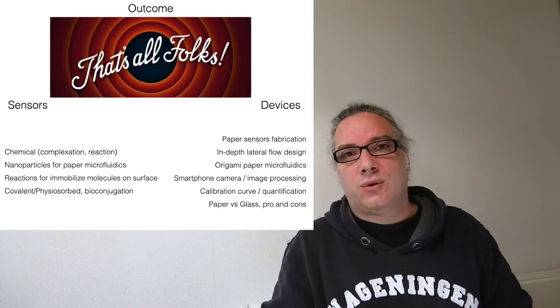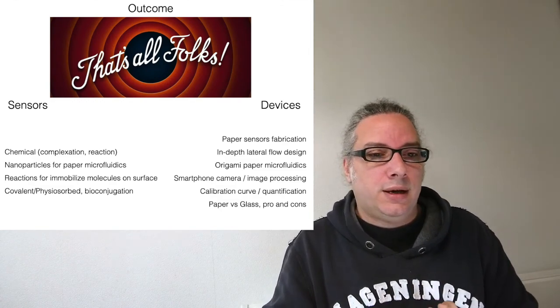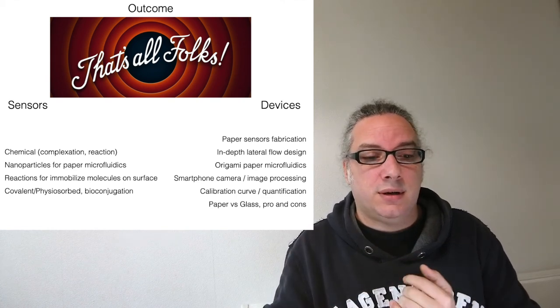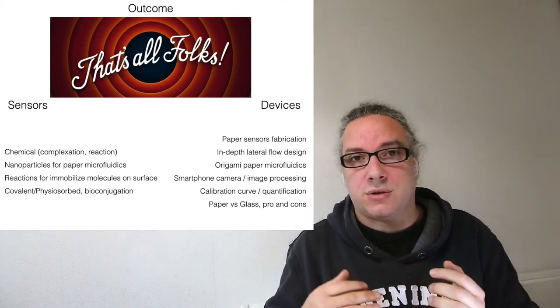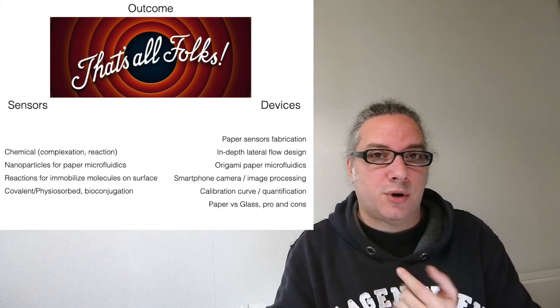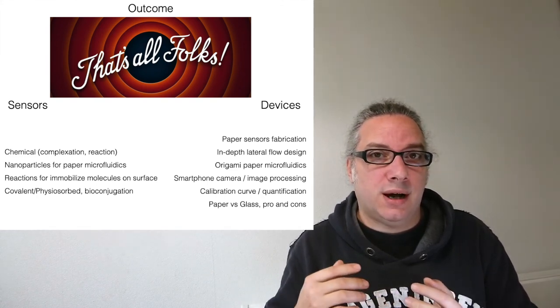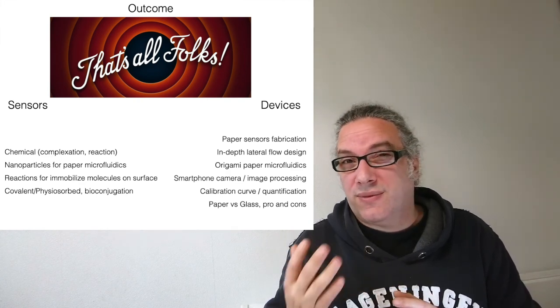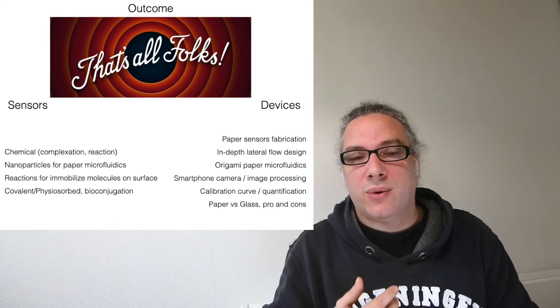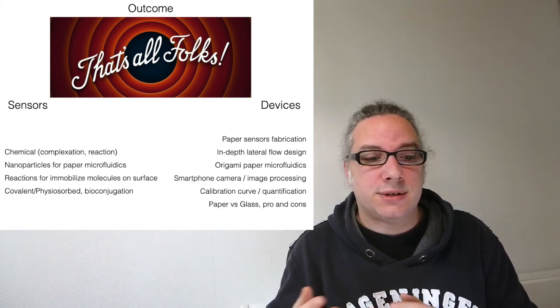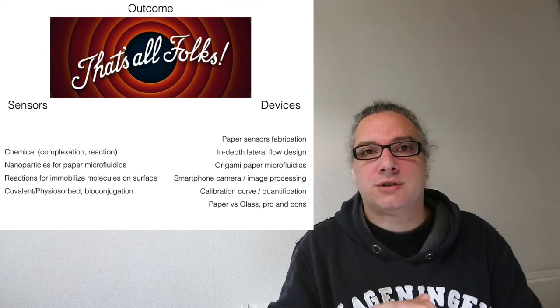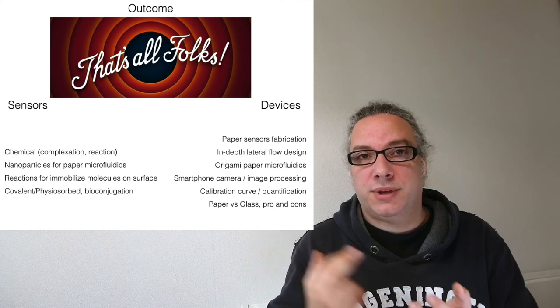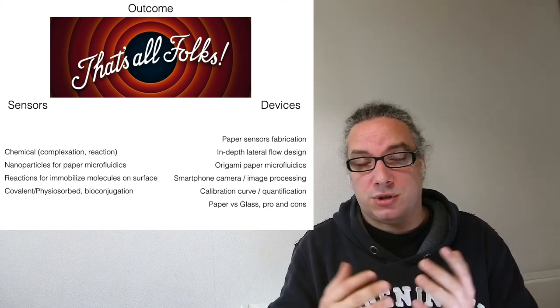And with this, I would like to conclude this day. What have we seen? We have seen different chemicals, how they work with complexation or reaction. Also in the laboratory at home, we will see how those chemicals work. We have seen, or actually on Friday, you will tell me why we are using nanoparticles for paper sensors. We have seen one main reaction: how to immobilize reactants on top of glass, on top of PDMS, or on top of paper, which is practically the same.